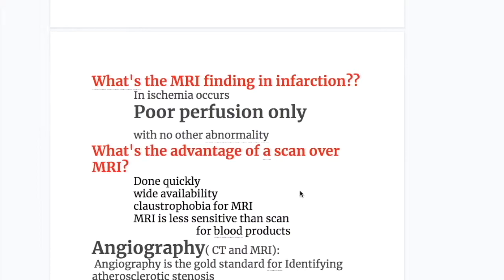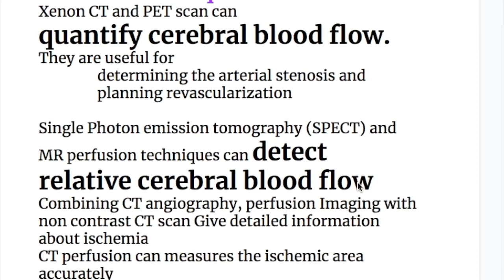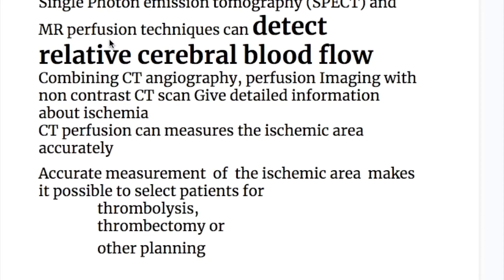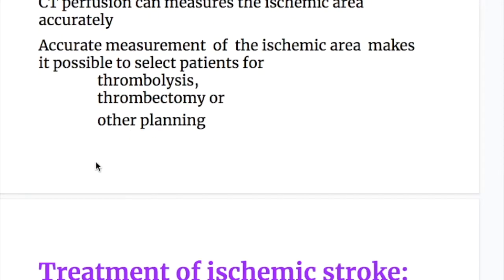In ischemia, MRI shows poor perfusion only with no other abnormalities. Xenon CT and PET scan can quantify cerebral blood flow and are useful for determining arterial stenosis and planning revascularization. Single photon emission tomography and MR perfusion techniques can detect relative cerebral blood flow. Combining CT angiography perfusion imaging with non-contrast CT gives detailed information about ischemia, and CT perfusion can measure the ischemic area accurately, helping select patients for thrombolysis or thrombectomy.